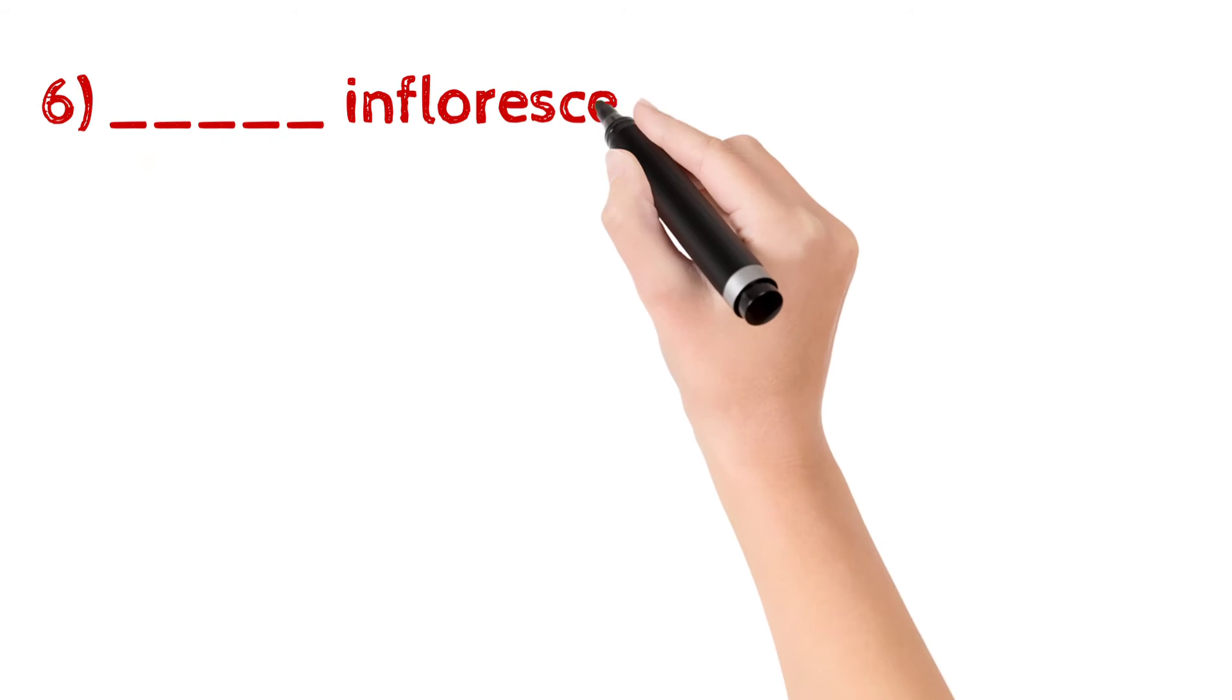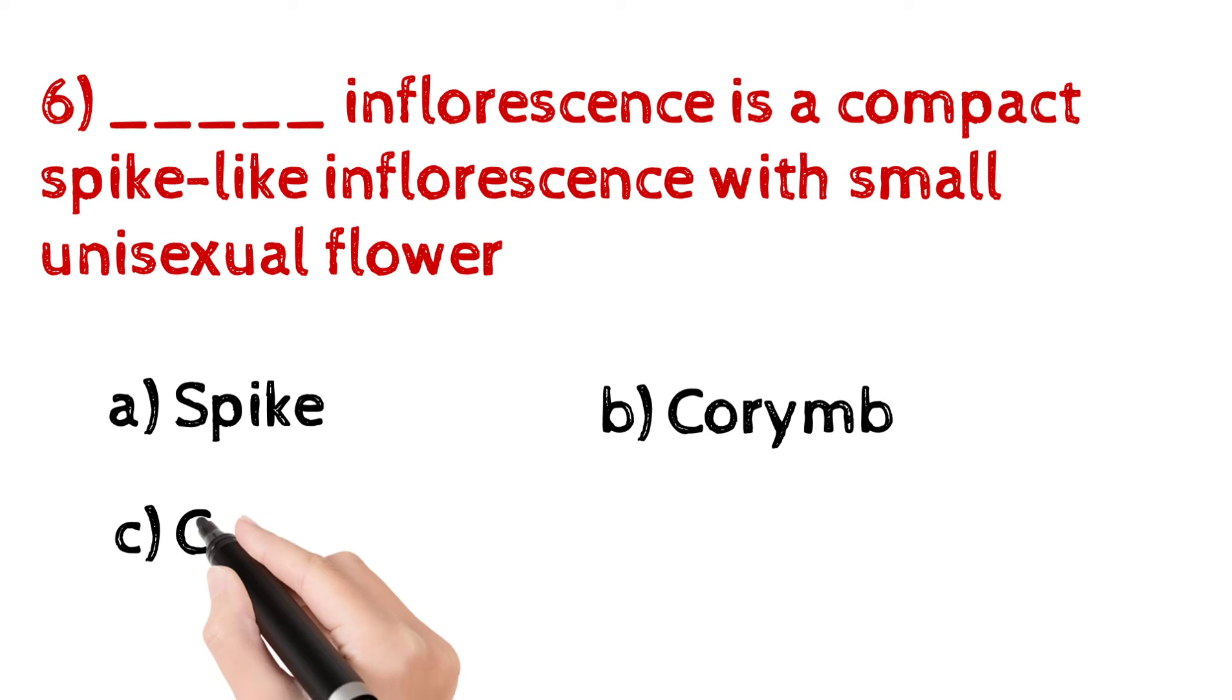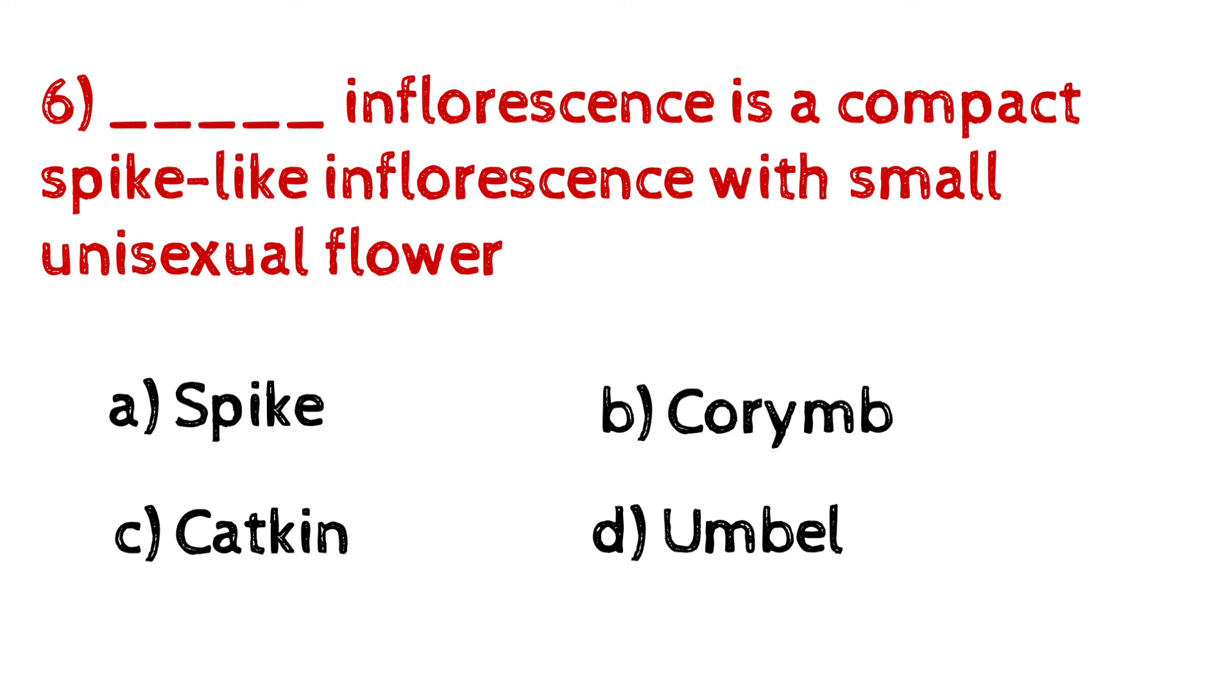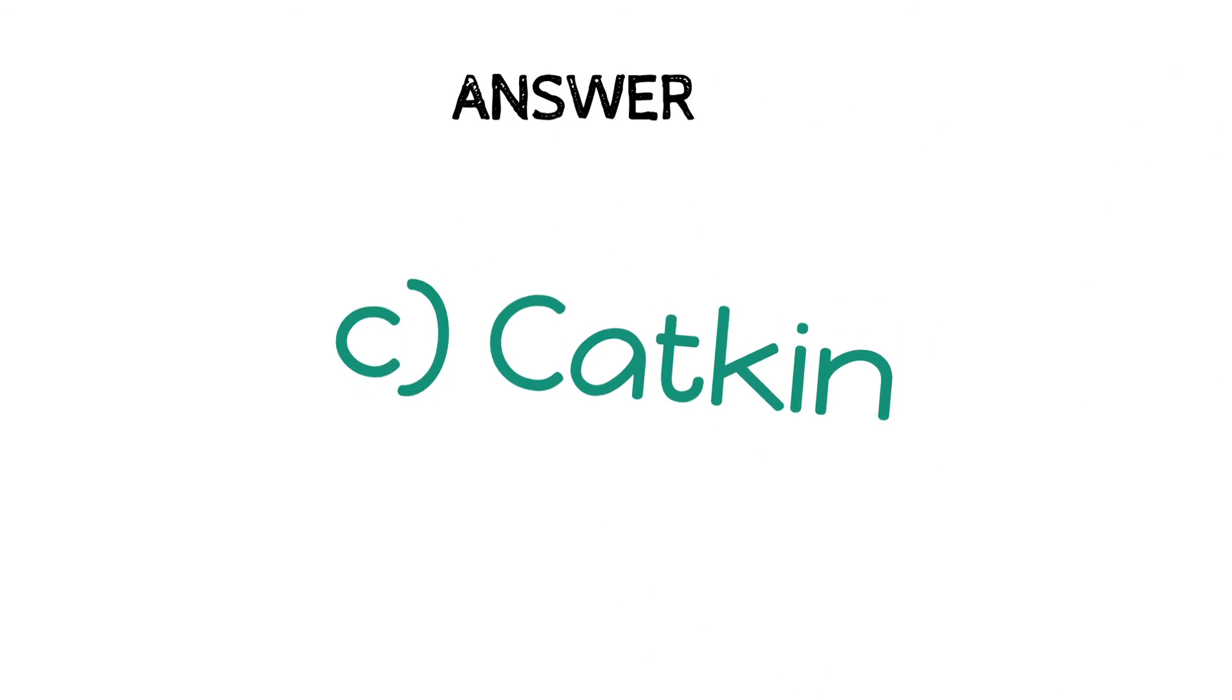Question number 6: Blank inflorescence is a compact spike-like inflorescence with small unisexual flowers. A. Spike, B. Corymb, C. Catkin, D. Umbel. And the answer is C, Catkin.